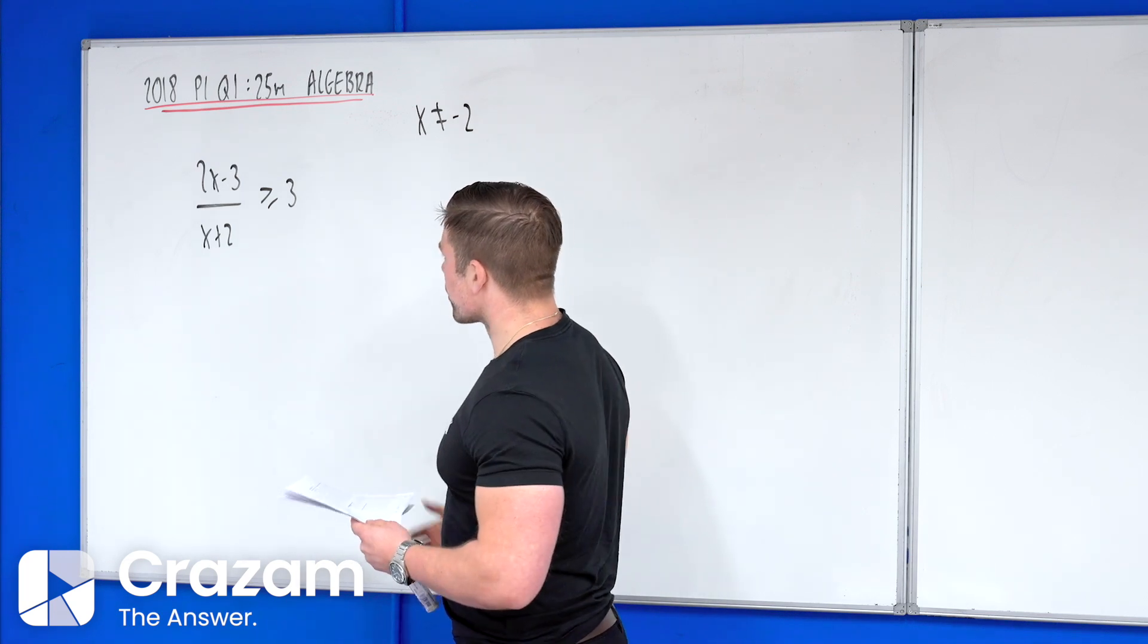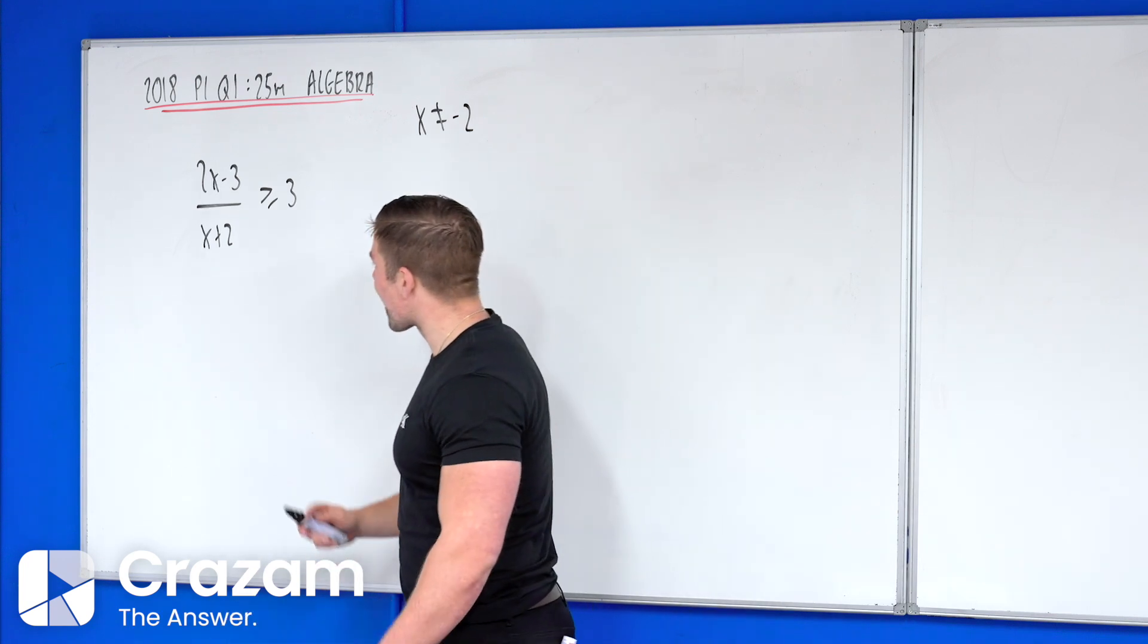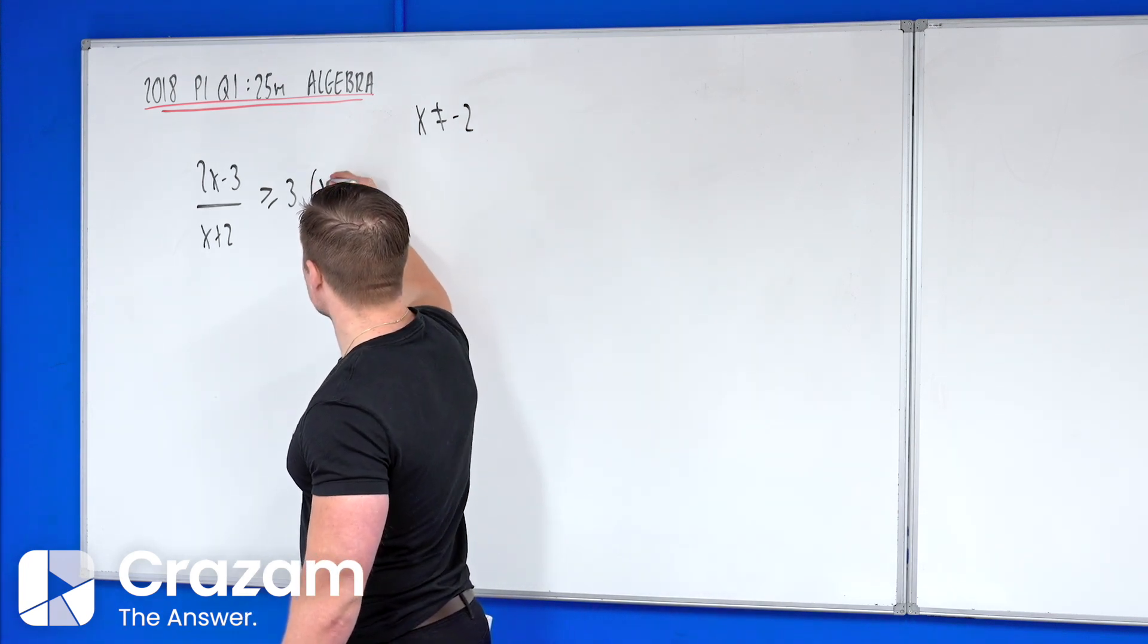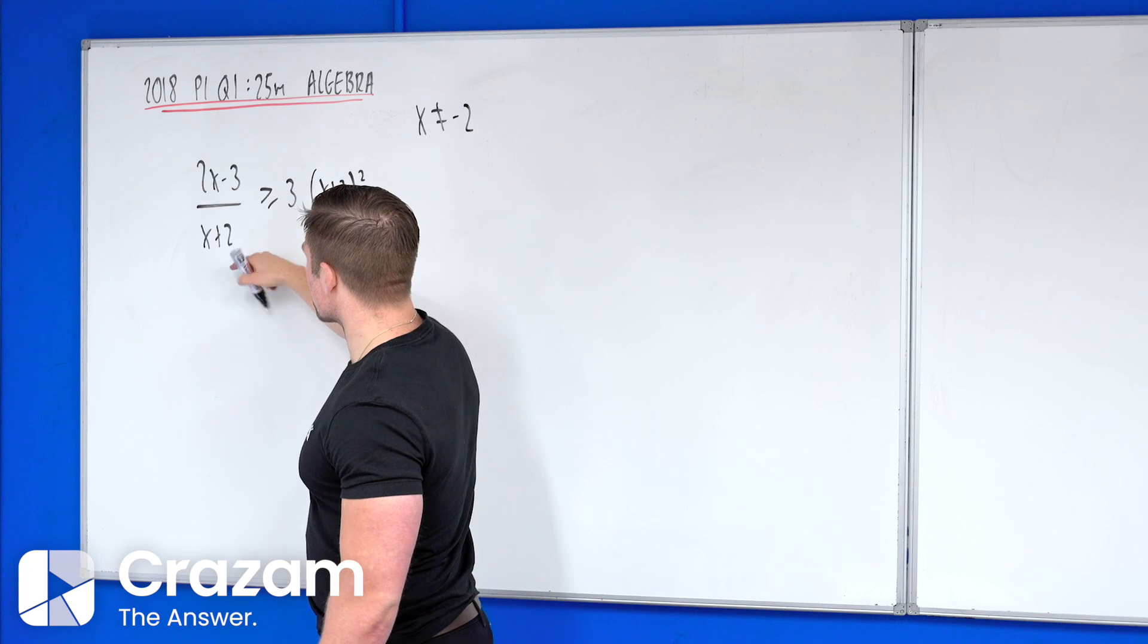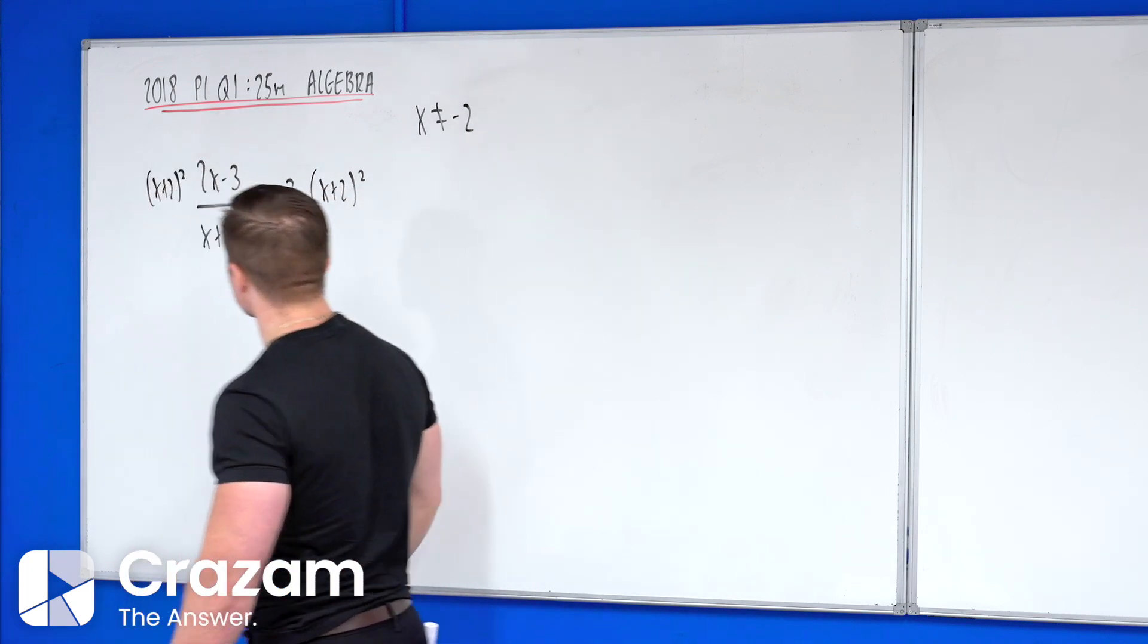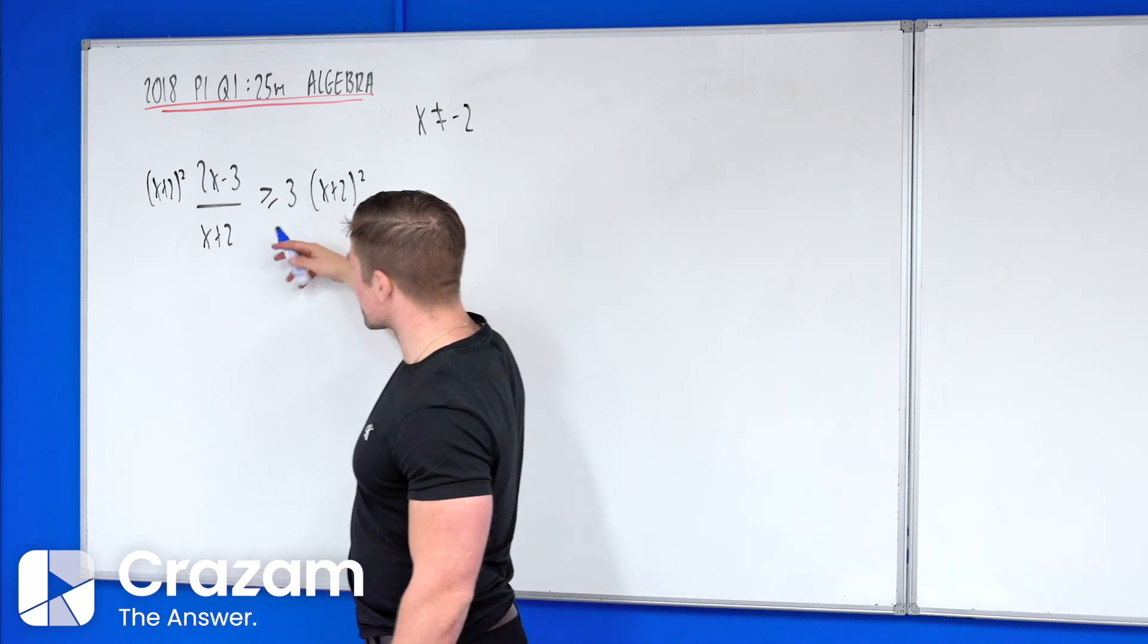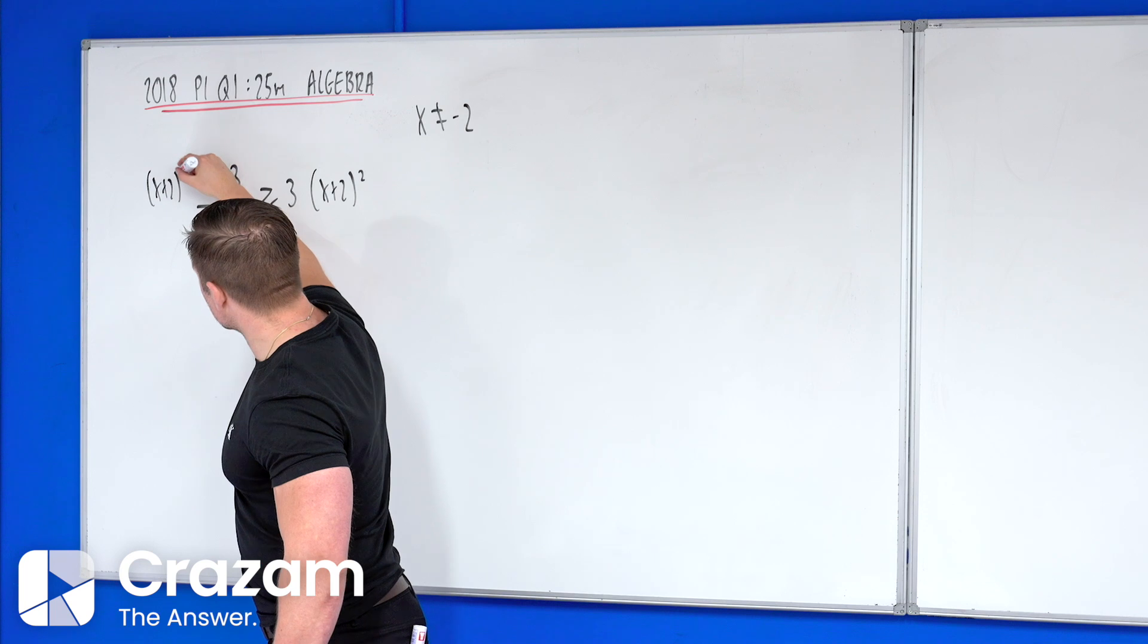So first thing we've got to do is we've got to get rid of the brackets. In inequalities when we get rid of the brackets it's slightly different. We're going to multiply both sides by the denominator squared, by x plus 2 squared. So slightly different in inequalities. What that does is allows the inequality to stay in the same place but it also gets rid of the fraction.